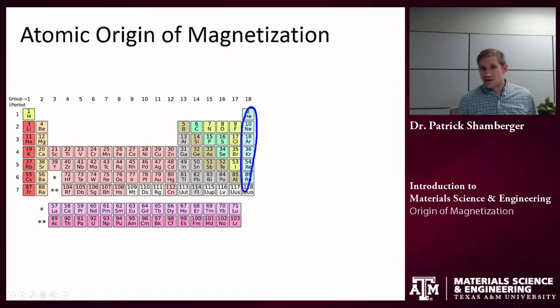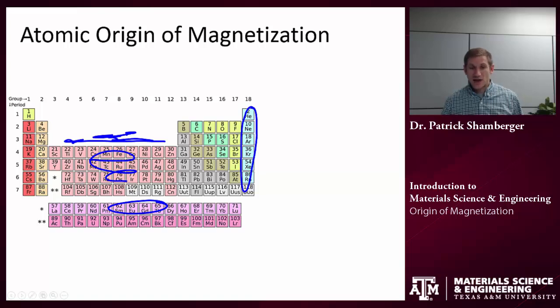And so what that means is a couple things. First of all, the noble gases are never going to have a residual magnetic moment because they're always closed shell. We never have unpaired electrons. So the things that tend to be the most magnetic are those that are kind of in the middle of the transition metal series because we can have a lot of unpaired electrons here. Or in the middle of the rare earth series. So we can have, again, we can have a lot of unpaired electrons in the middle of these series.